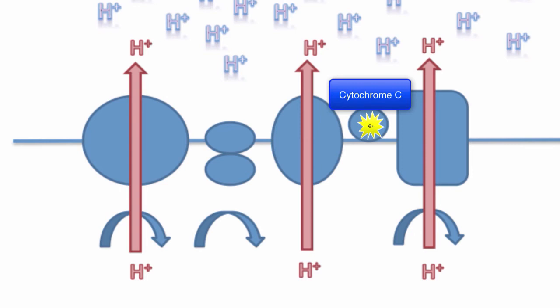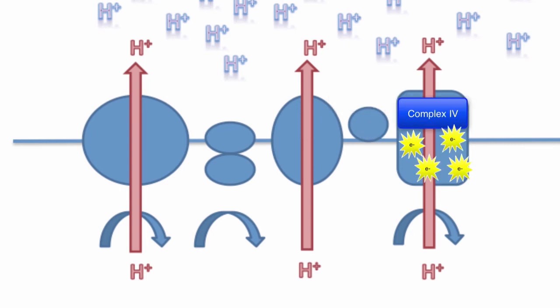Cytochrome C transfers the electrons to complex 4, which sends the electrons out back into the mitochondrial matrix, where they are added to two hydrogen protons and half an O2 molecule to make one molecule of water.